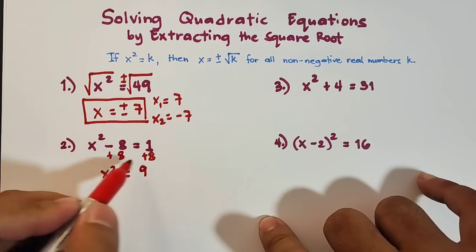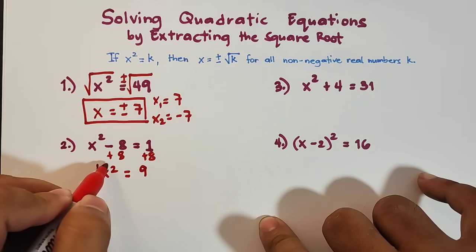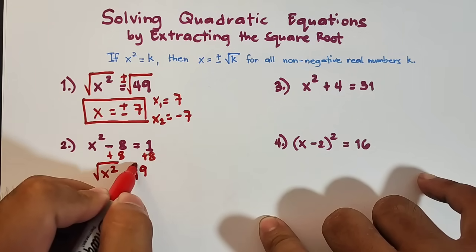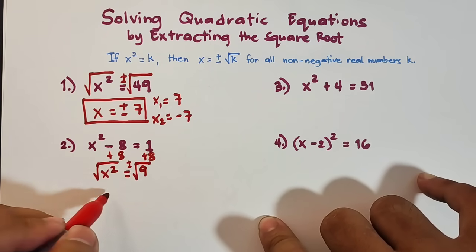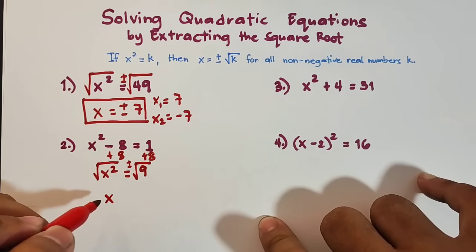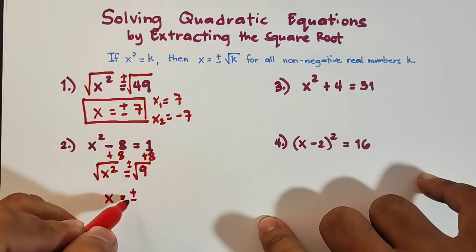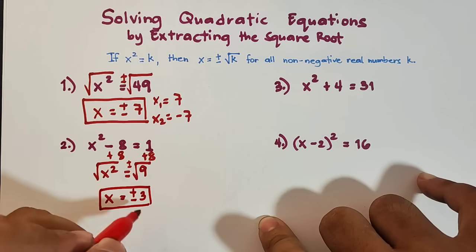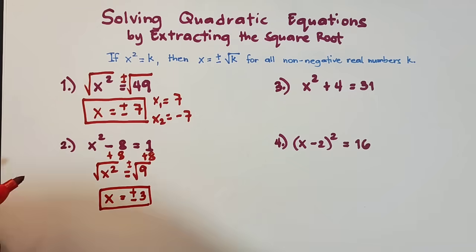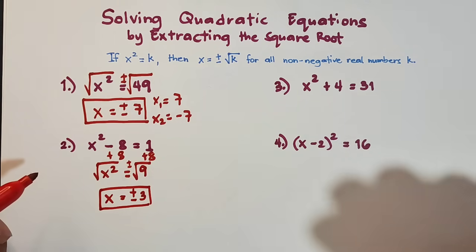Now we have the same pattern as number 1, so we extract the square root of both sides — remember positive and negative. The square root of x squared is x, and the square root of 9 is positive or negative 3. So we have two different roots: positive 3 and negative 3.